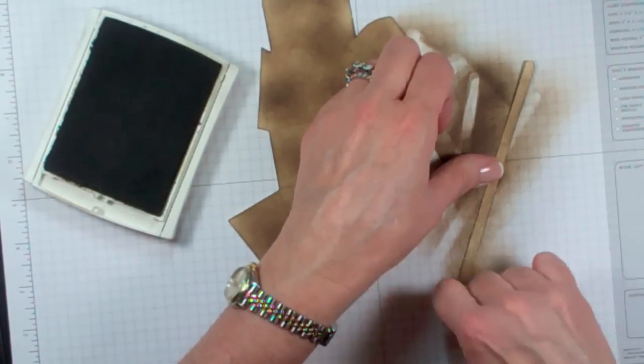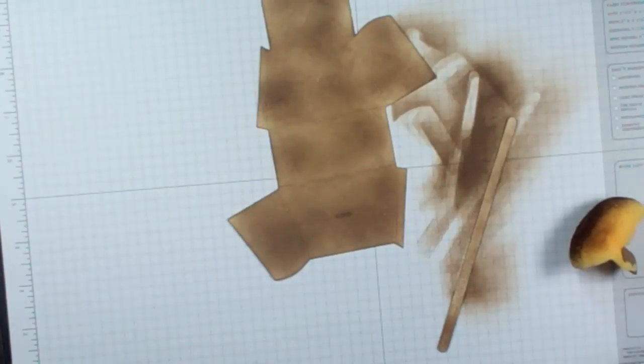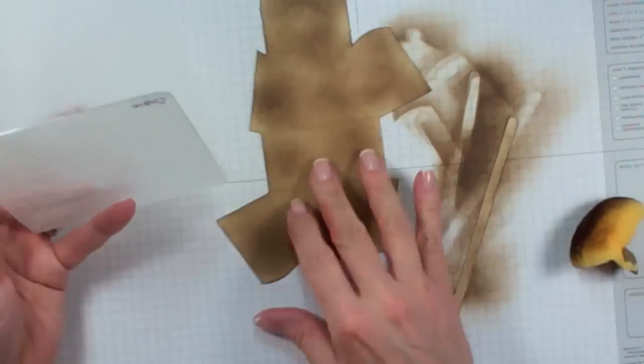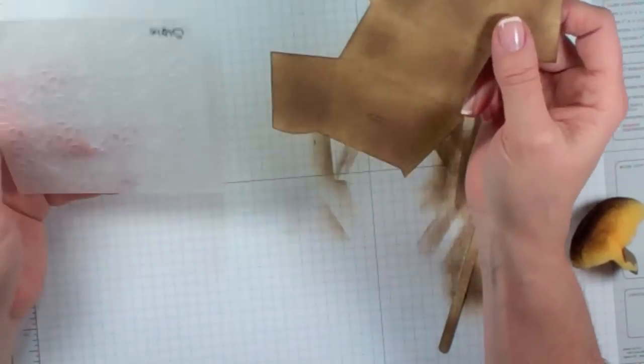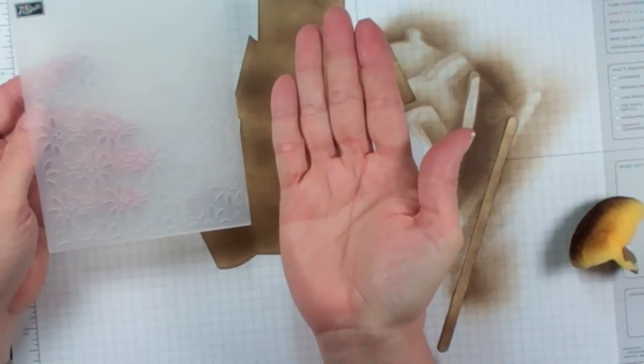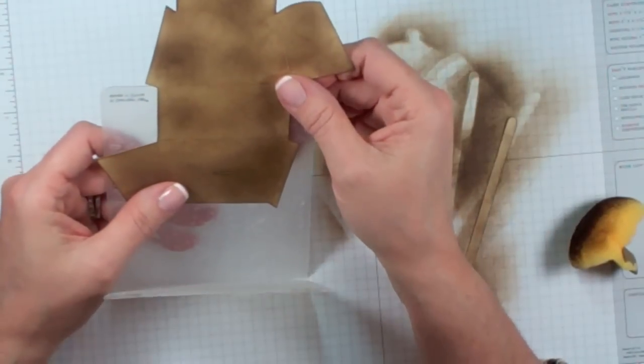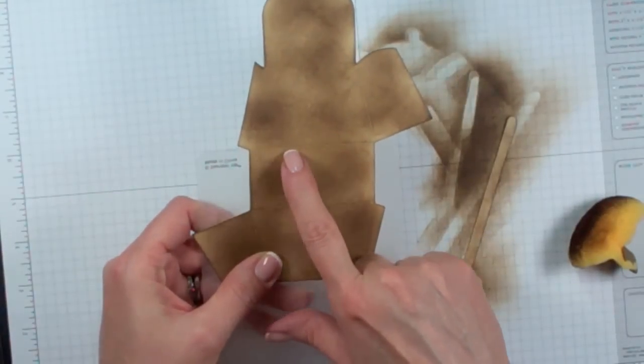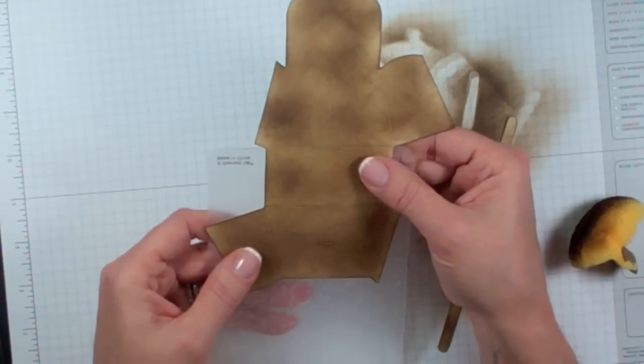Once you have them both covered, we're then going to get this nice design on there. We're going to put it through our Big Shot using the finial press embossing folder. When you put it in here, you're going to have to do it two times because it's too big the way it is. You want to make sure that you are impressing the design up so that it punches out. I'm going to line it up with the seam here at the top of my embossing folder.